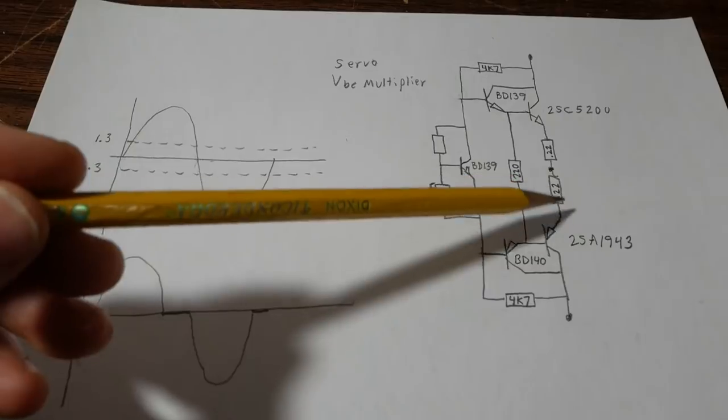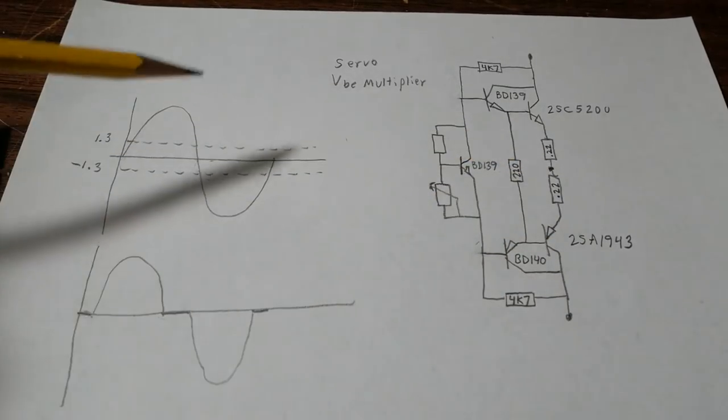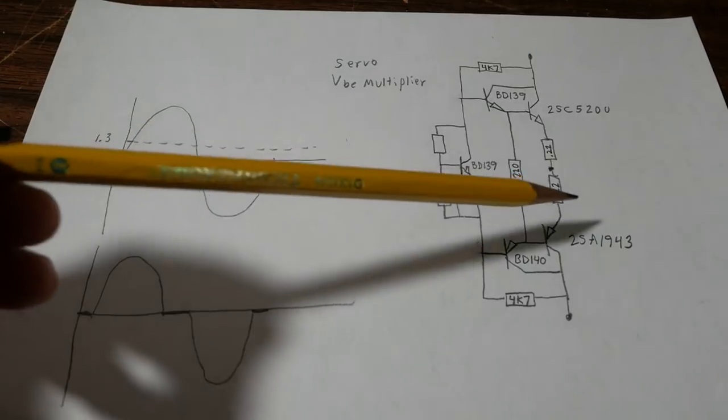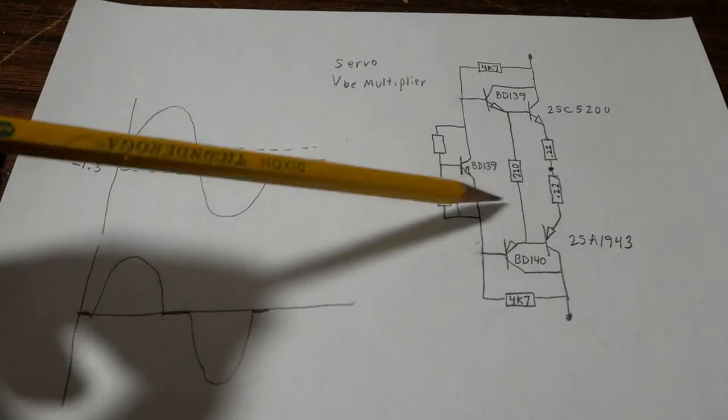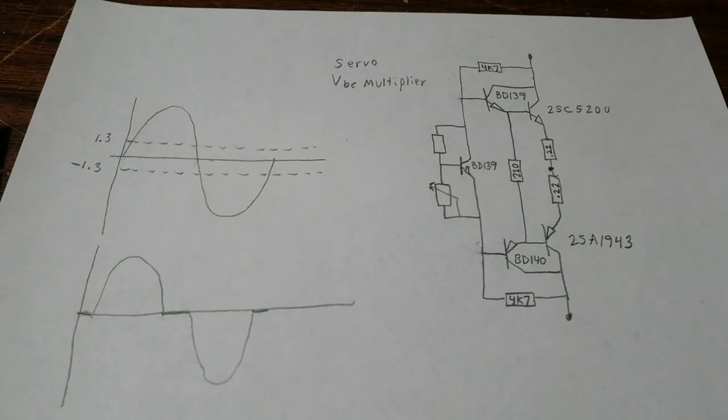Now you might think of running the bias even higher because the higher you are the further you are away from crossover distortion issues. In fact if you run it high enough eventually you'll be into class A. Well there's a problem it's called GM doubling.